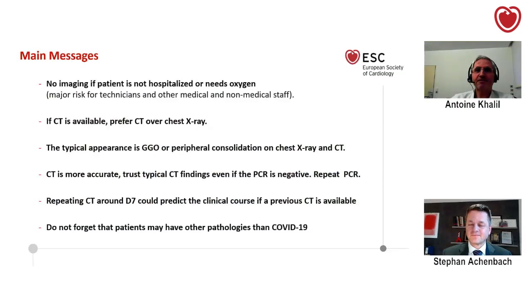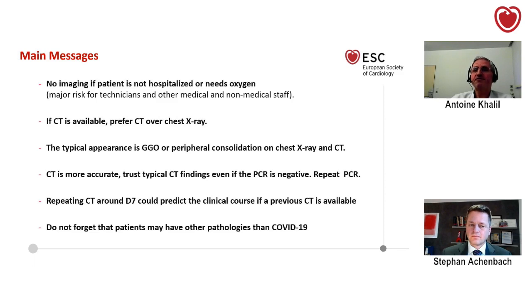Summary key messages: No imaging if the patient is not hospitalized or does not need oxygen — this is important because we must preserve our medical staff capacity over the coming months and protect technicians from contamination. If CT is available, prefer CT over chest X-ray. The typical appearance is ground glass opacities or peripheral consolidation on chest X-ray and CT. CT is more accurate than PCR — if CT findings are typical even with a negative PCR, repeat the PCR. Repeating CT around D7 to D8 can predict the clinical course if a previous CT is available. Do not forget that patients may have other pathologies than COVID-19.